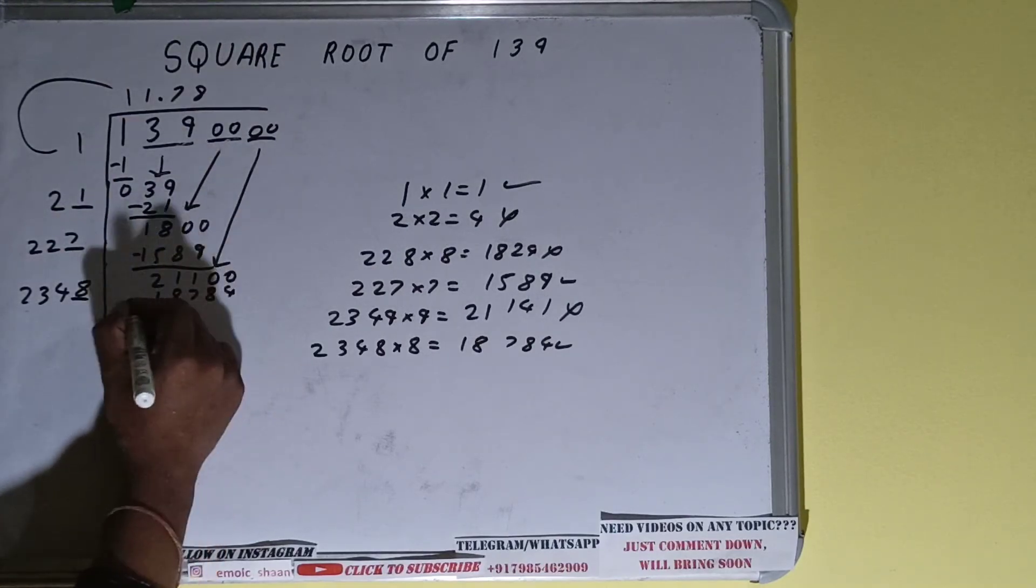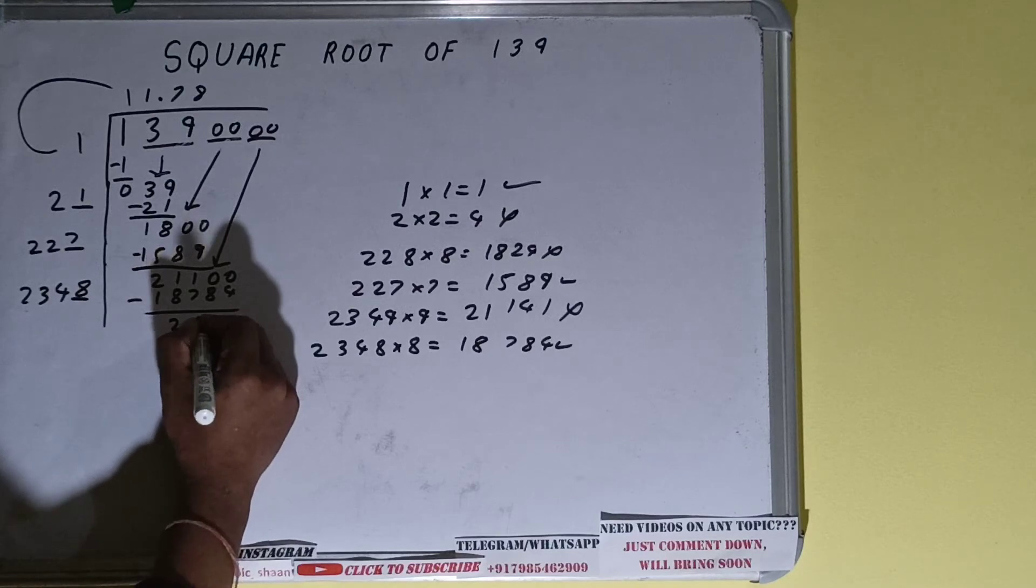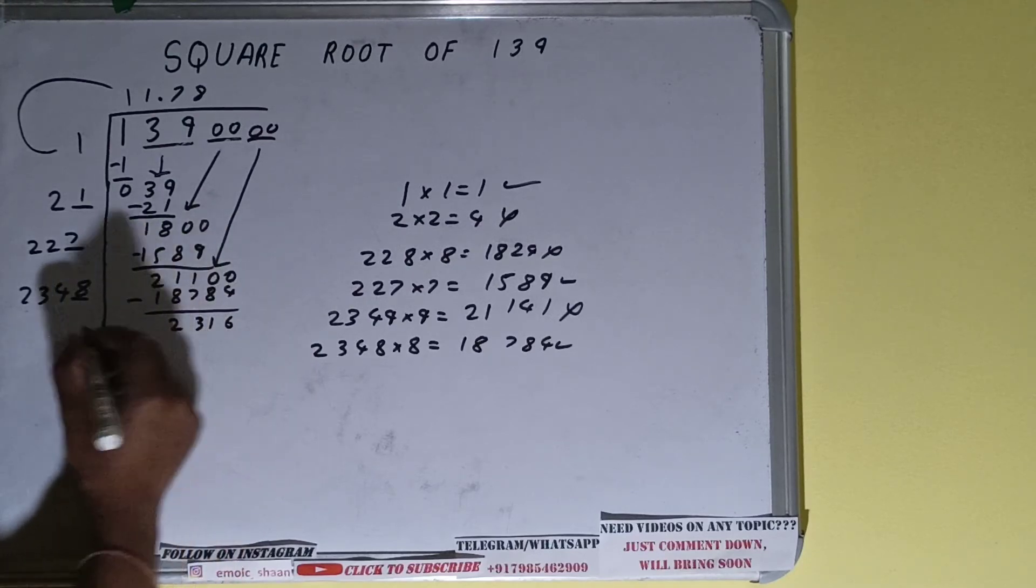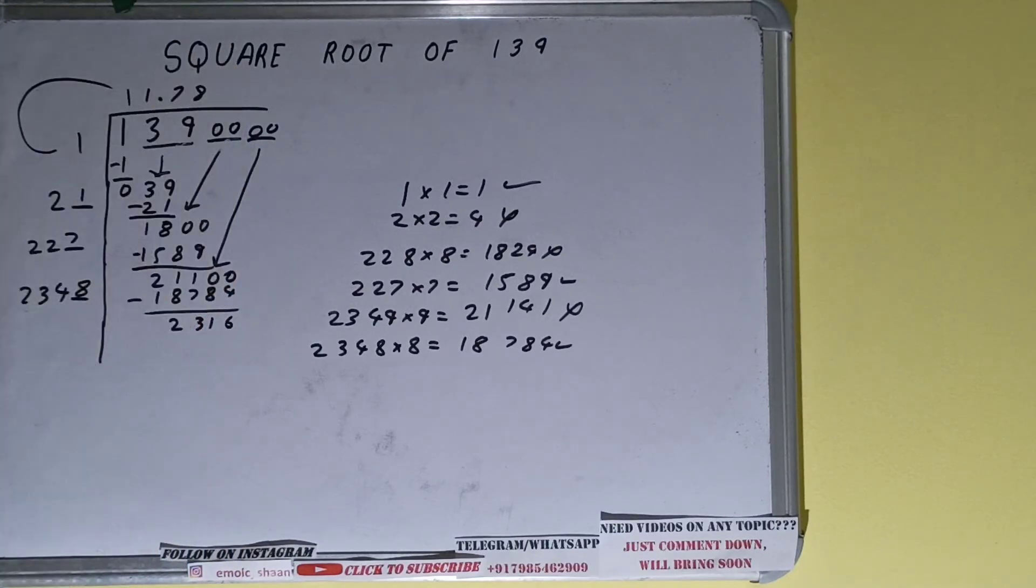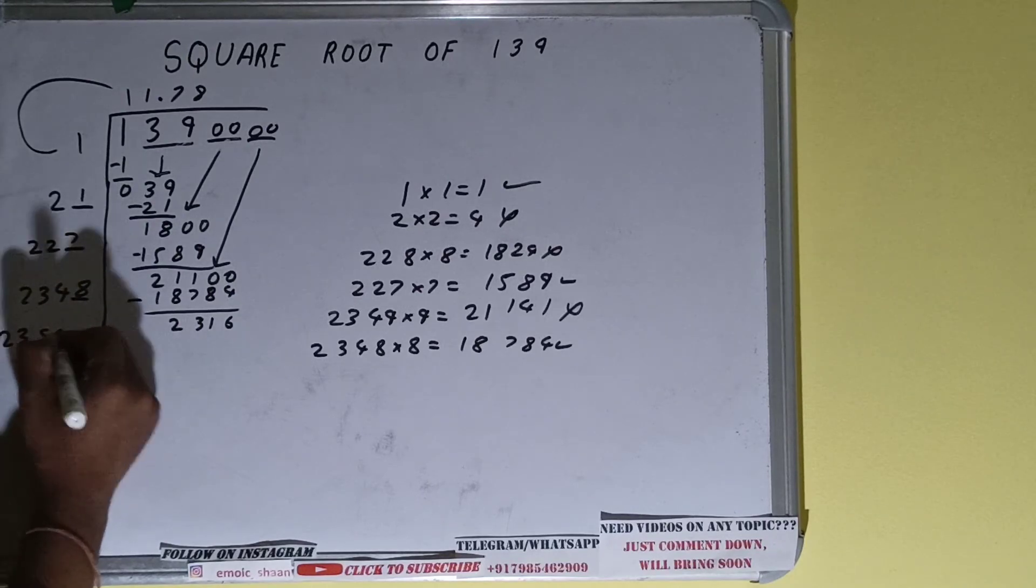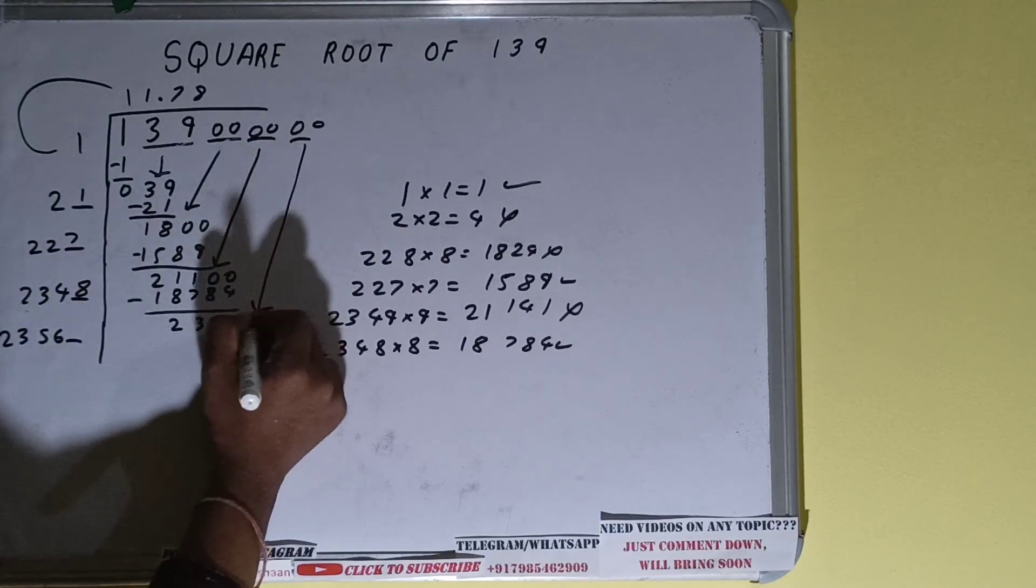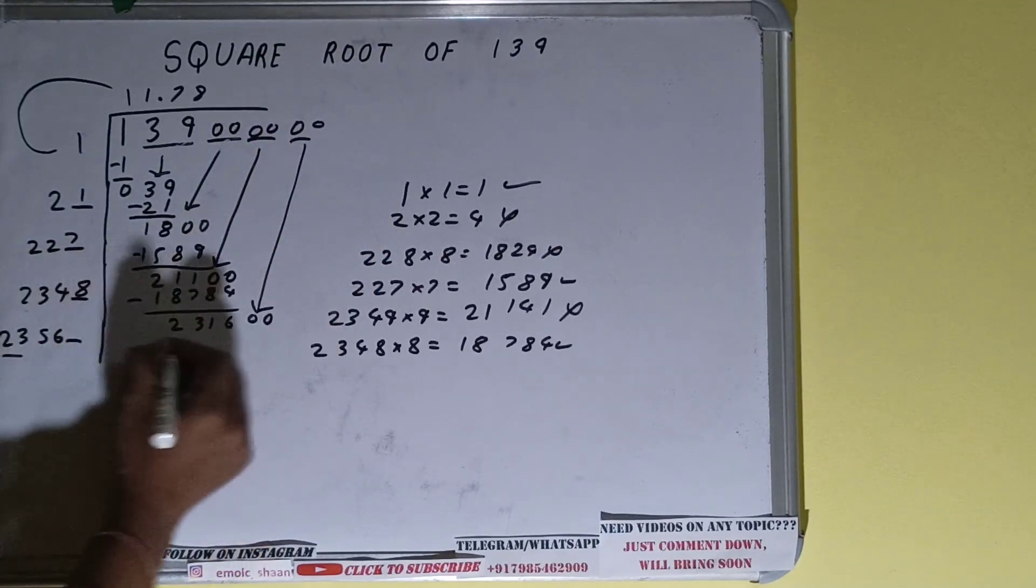We'll be left with 2316. Now again this 2348 into 8 we did, so add both, it will be 2356 and one digit extra. We'll bring one more pair of zeros down. Now compare this 23 with this 231. We can try nine times clearly.